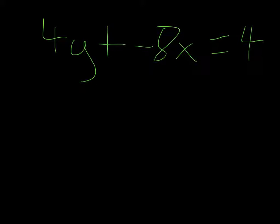So let's take a look at our first equation, which is 4y plus negative 8x equals 4. So the first step in finding if they're parallel is we have to turn both of the lines into y equals mx plus b form.